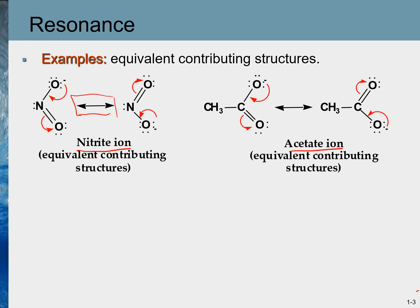This double-headed arrow is not the same as a reversible arrow seen in chemical equations — this is not a chemical reaction. Also, this kind of representation may give the impression that bonds and electron pairs are constantly changing back and forth. But that's not correct. It's not a back-and-forth hopping of electrons and bonds between the two resonance structures.